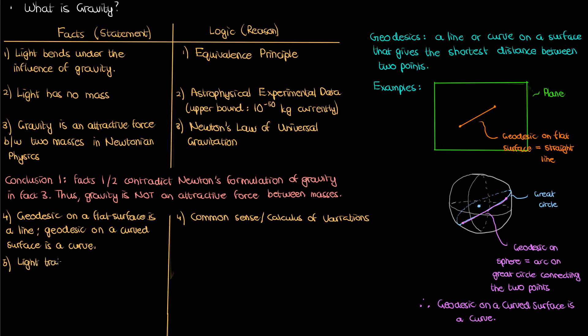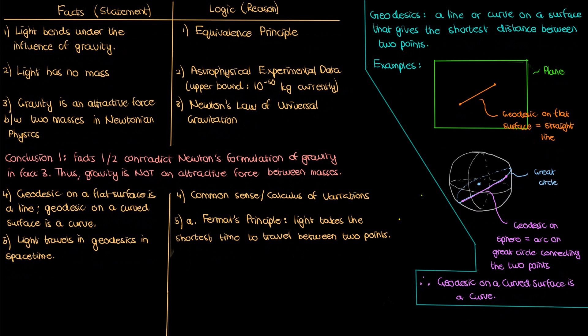The next assertion I'll make is that light travels only in geodesics in space-time. The logic behind this is twofold. First, this assertion is basically an extension of Fermat's principle for light, which asserts that light takes the shortest time between two points. So if I have two points in the same medium on a flat surface, then light will travel in a straight line to get from one point to another. You see this every day in your real life. Light usually takes a straight line.